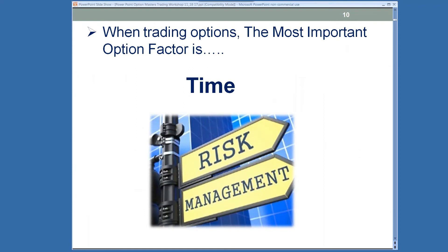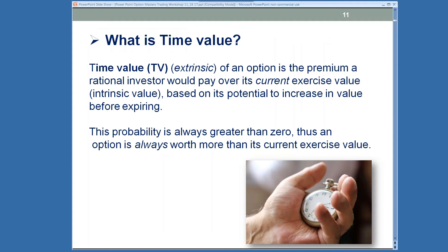Let's take a look at time, which really is the most important option factor when we're trading options. Time value is the extrinsic value of the option — it's the premium that a rational investor is going to be willing to pay over the current exercise value, known as the intrinsic value, based on its potential to go up in value before expiring.